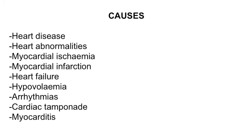Circulation complications can be caused by primary heart disease or by heart abnormalities secondary to other problems. Some common causes include heart disease, heart abnormalities, myocardial ischaemia, myocardial infarction, heart failure, hypovolaemia, arrhythmias, cardiac tamponade, and myocarditis.